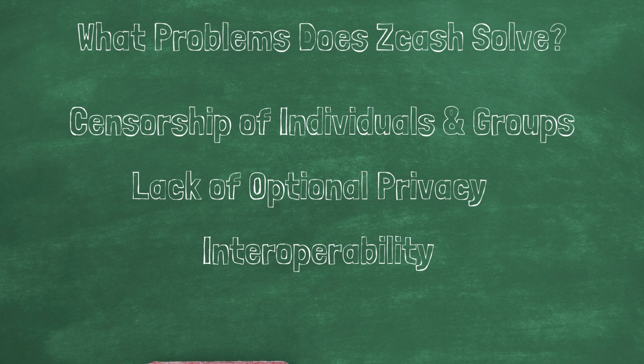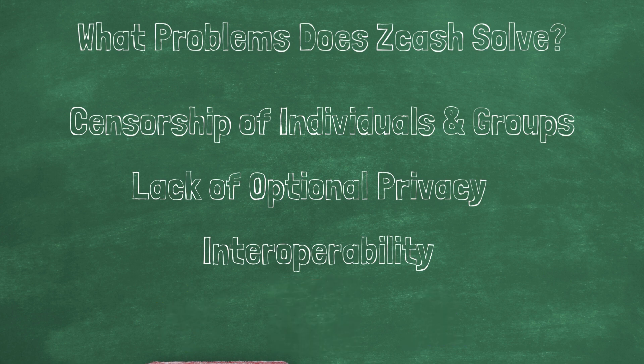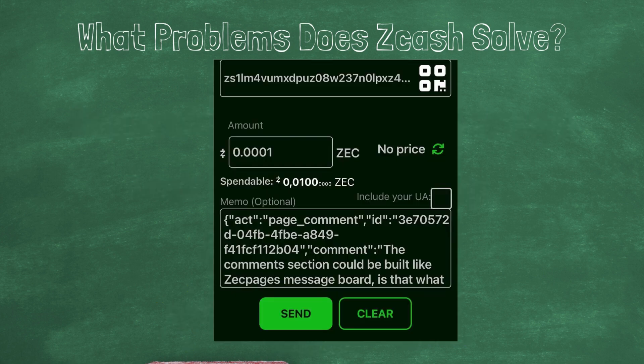Programmable transactions and interoperability with other chains is also very exciting. We'll take a look at the new bridges currently in development in a later video. Zcash also has an encrypted memo field, which is currently being used to introduce additional functionality in web applications such as Free2Z.